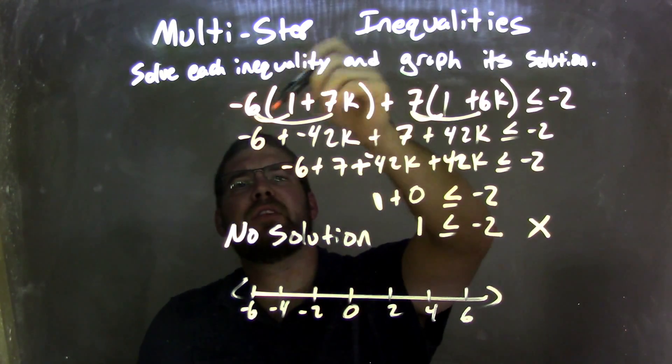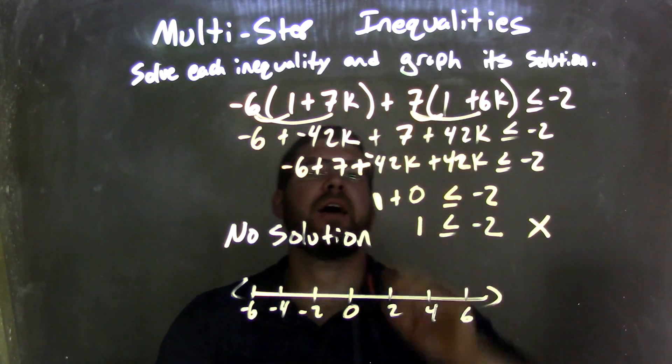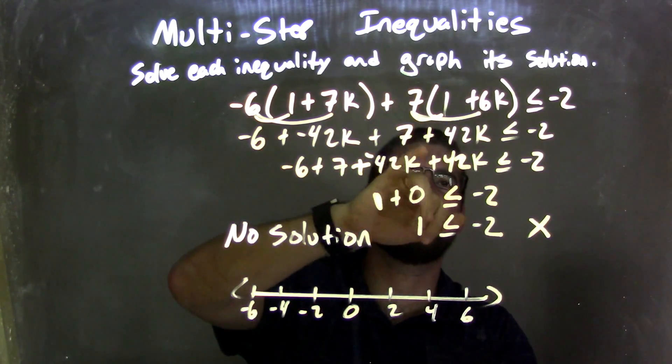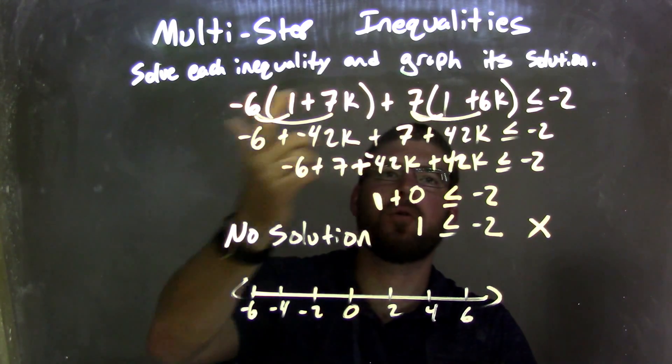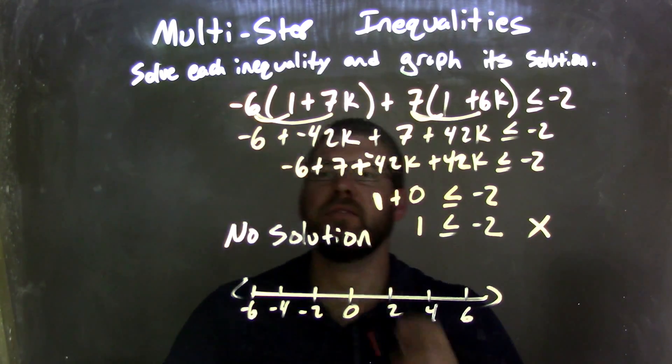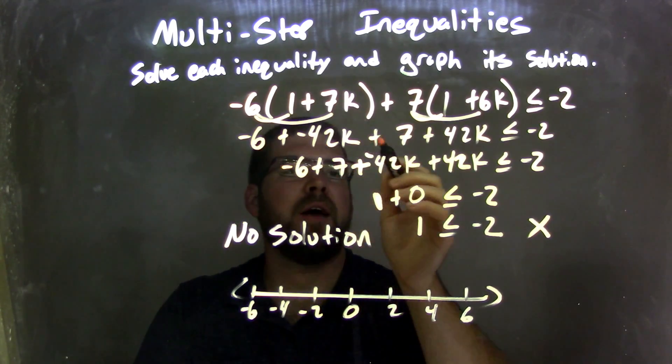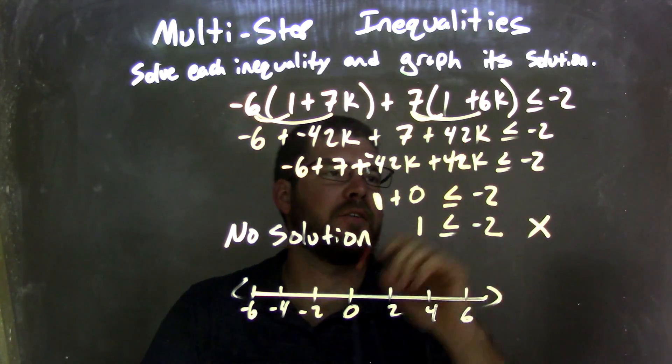So let's recap. We're given negative 6 times parentheses 1 plus 7k, plus 7 times parentheses 1 plus 6k is less than or equal to negative 2. I distribute across, giving me, for each set of parentheses, negative 6 plus negative 42k plus 7 plus 42k is less than or equal to negative 2.